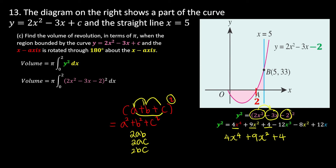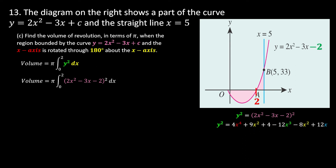Next cross term: 2(2x²)(-2) = -8x². Final cross term: 2(-3x)(-2) = 12x. Combining like terms: 9x² - 8x² = x². So y² = 4x⁴ - 12x³ + x² + 12x + 4.